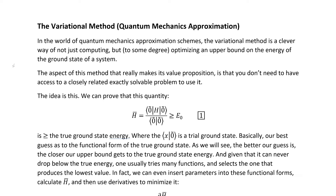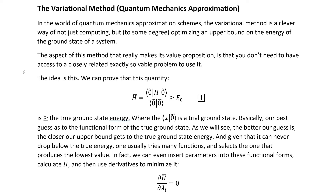In the world of quantum mechanics approximation schemes, the variational method is a clever way of not just computing, but to some degree optimizing an upper bound on the energy of the ground state of a system. It's critically different from perturbation theory: it's not attempting to approximate the actual energy states, it's just giving us an upper bound, and it's doing it only on the ground state rather than any of them. Those two things might seem like a very serious drawback, but this has a good value proposition.